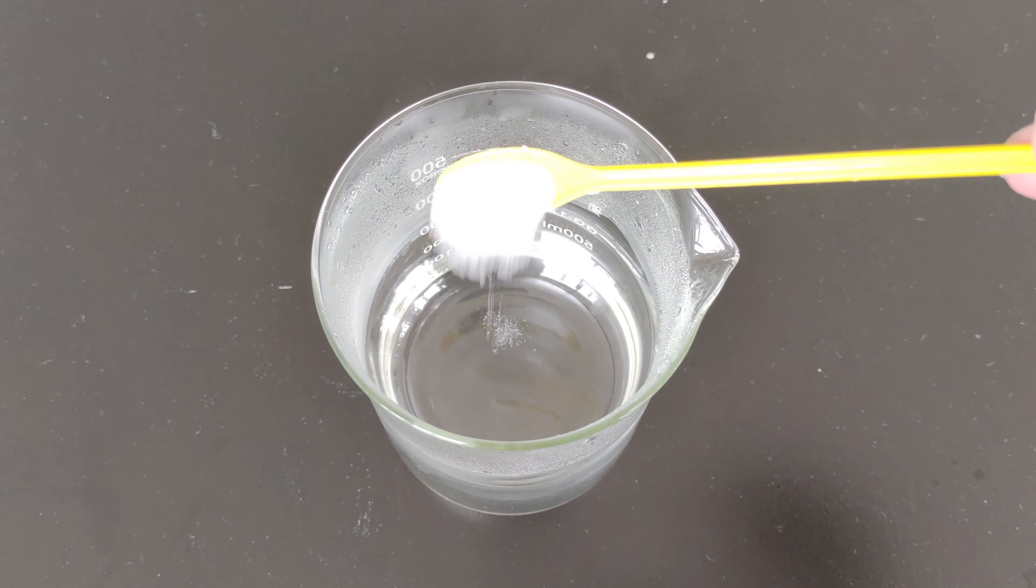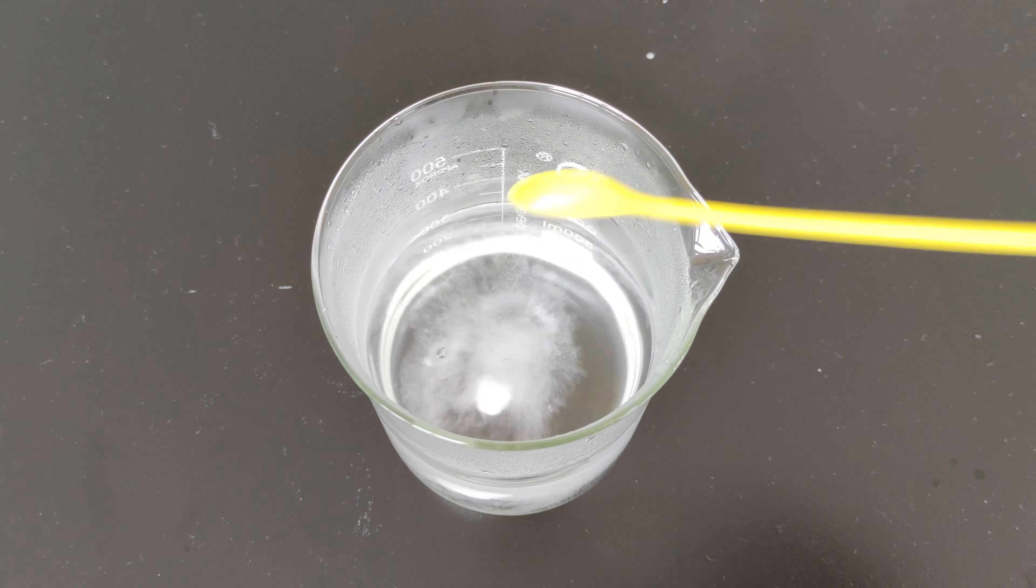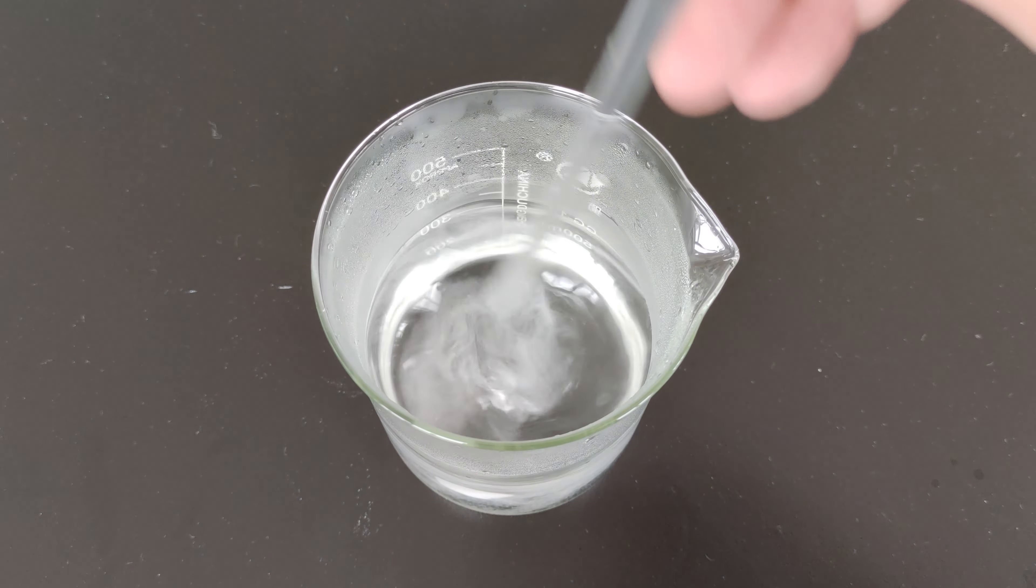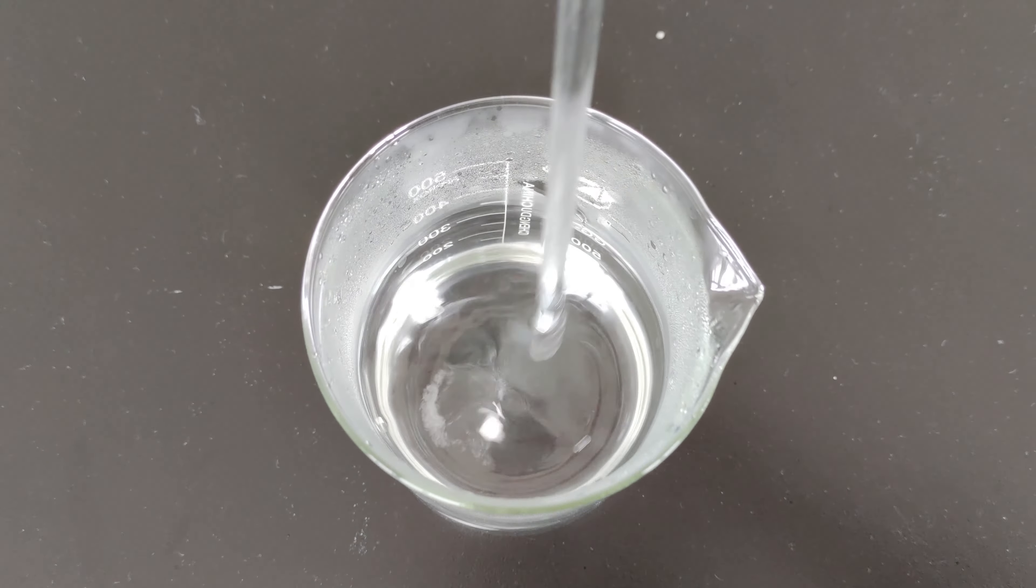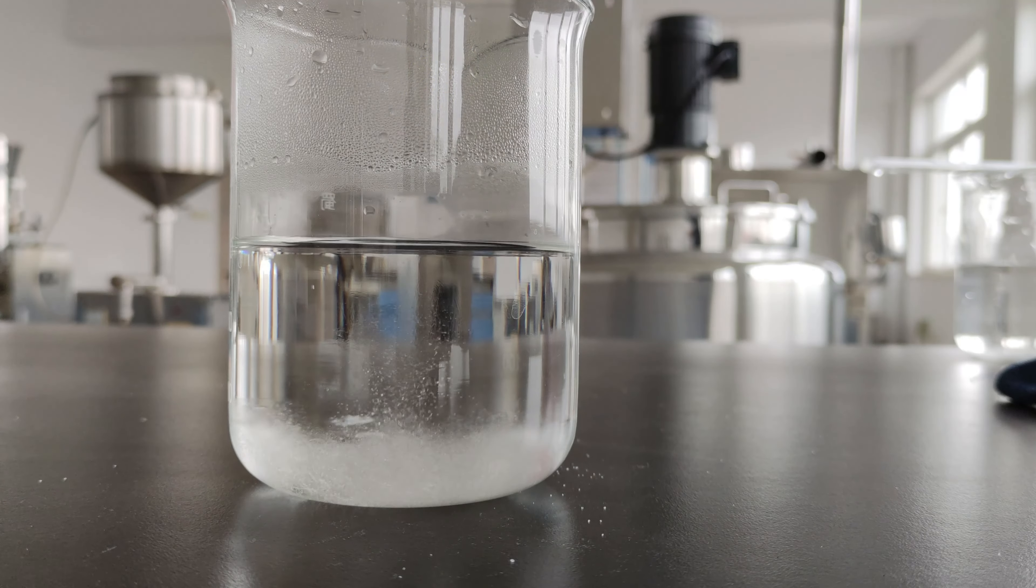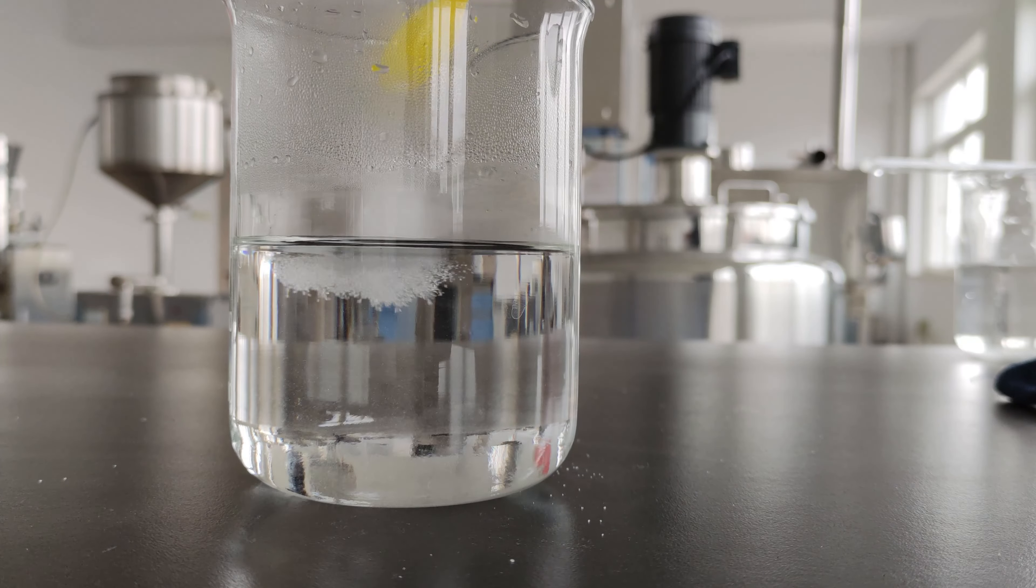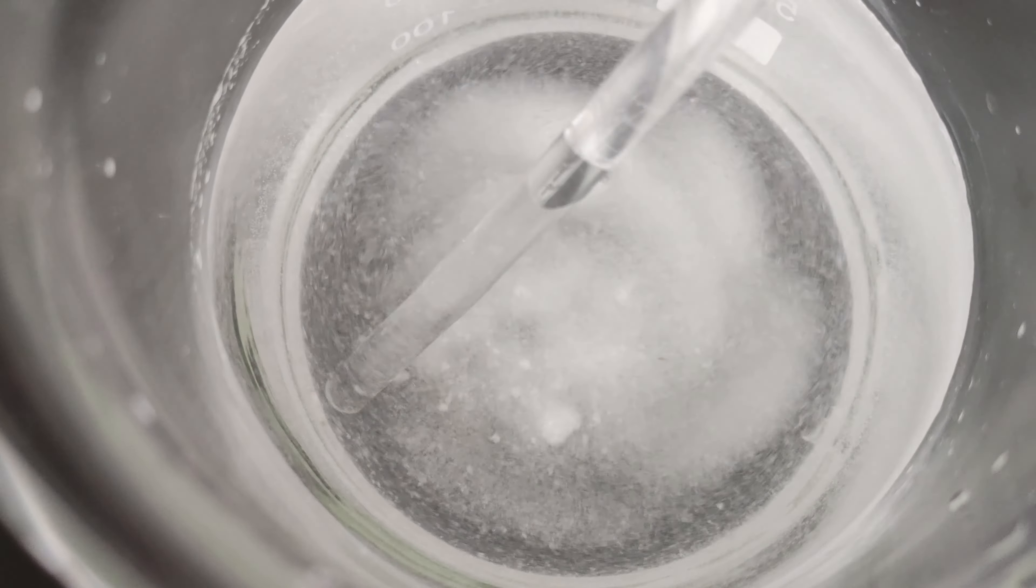Alright, if we want those sodium chloride crystals, step one is getting a saturated sodium chloride solution ready to roll. Add sodium chloride to hot water and stir until it dissolves completely. Repeat this procedure until a small amount of sodium chloride remains undissolved at the bottom of the beaker, indicating that the solution is saturated.